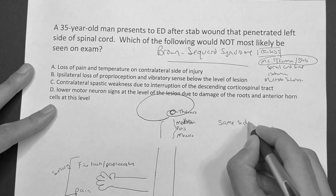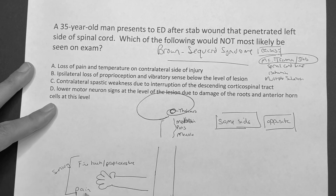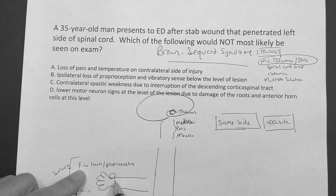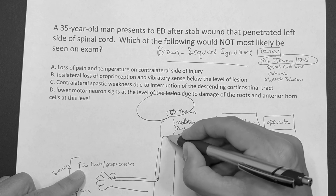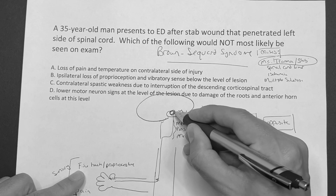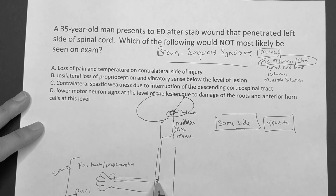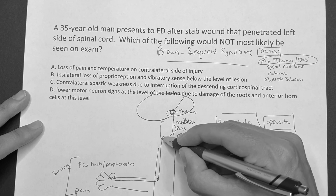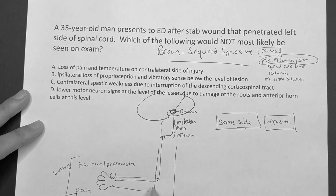Starting with fine touch and proprioception: if someone tickles your arm or hand, that signal goes into the spinal cord on the same side, travels up the same side all the way to the medulla, and then crosses over. Then it goes to the thalamus and then to the part of the brain that processes the information. So fine touch starts on the same side of the spinal cord, goes up to the medulla, crosses over, then goes to the thalamus.